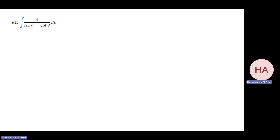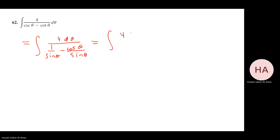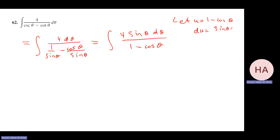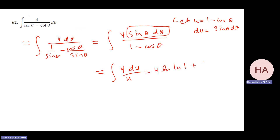Last problem: ∫ 4/(csc θ - cot θ) dθ. Converting to sine and cosine: 1/sin θ - cos θ/sin θ = (1 - cos θ)/sin θ. So the integral becomes ∫ 4 sin θ/(1 - cos θ) dθ. Let u = 1 - cos θ, du = sin θ dθ. The integral becomes 4 ∫ du/u = 4 ln|u| + C = 4 ln|1 - cos θ| + C.